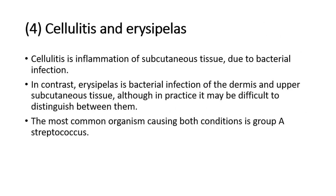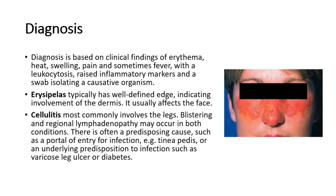The fourth topic is cellulitis and erysipelas. Cellulitis is inflammation of subcutaneous tissue due to bacterial infection. In contrast, erysipelas is bacterial infection of the dermis and upper subcutaneous tissue, although in practice it may be difficult to distinguish between them. The most common organism causing both conditions is group A streptococcus. Diagnosis is based on clinical findings of erythema, heat, swelling, pain, and sometimes fever, with leucocytosis, raised inflammatory markers, and a swab isolating a causative organism. Erysipelas typically has a well-defined edge indicating involvement of the dermis, and usually affects the face, whereas cellulitis most commonly involves the legs.